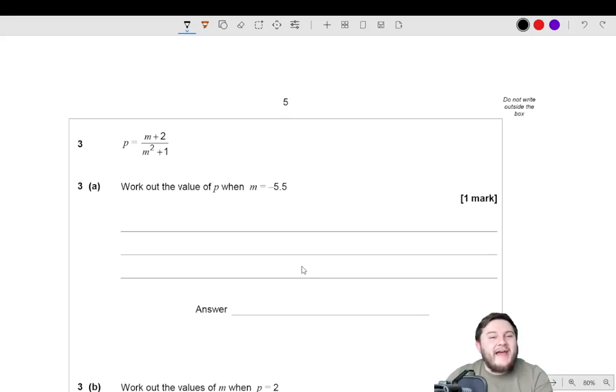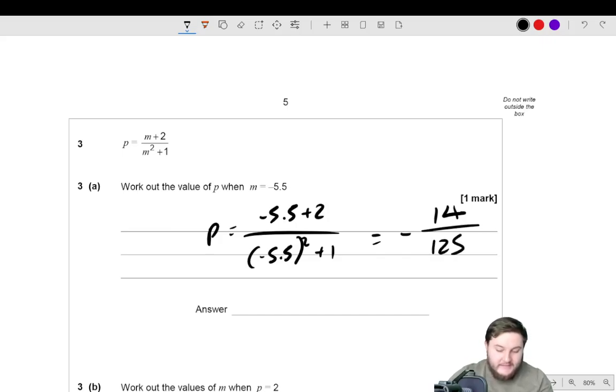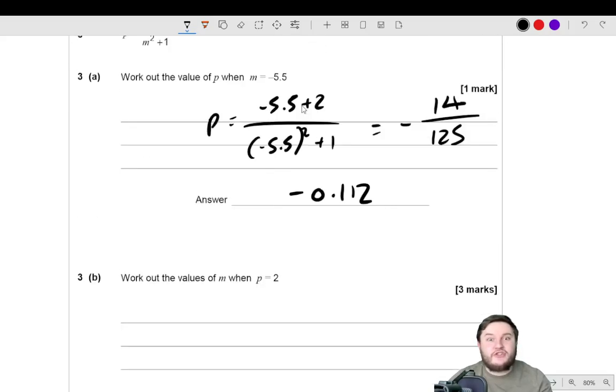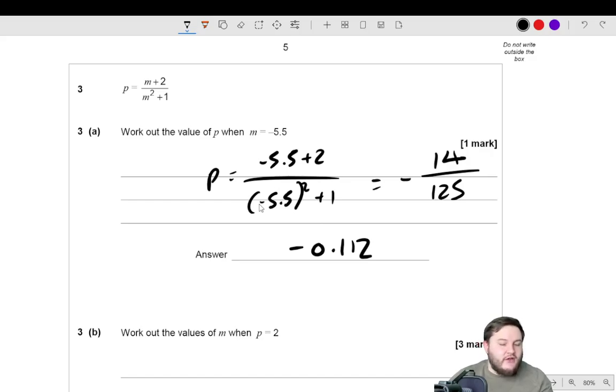Okay, question 3. P is equal to (m + 2) / (m² + 1). Work out the value of P when m is -5.5. Well, this is just a substitution, right? So P is equal to (-5.5 + 2) / ((-5.5)² + 1). The reason why I put the -5.5 in brackets when I type it in my calculator is because if you don't, the calculator will do the squaring wrong. What it will do is it will try to do 5.5 squared, because it does the order of operations. Then it will put the negative in front. But that's not what you want it to do. You want it to square -5.5. So you have to put that in brackets, add the 1, and I believe you get, as a fraction, -14/125. And as a decimal, that is -0.112. So just a substitution for 1 mark. You've got a calculator, so hopefully not too strenuous. It's just about just making sure we're typing this in brackets. That is the only thing that really could go wrong.